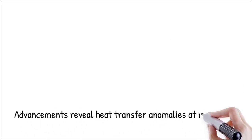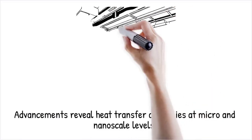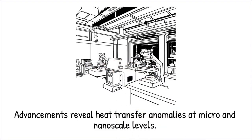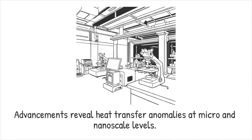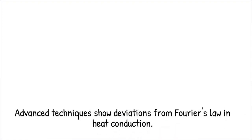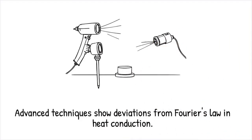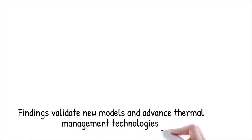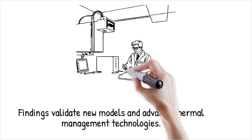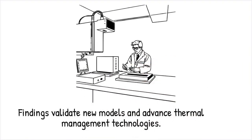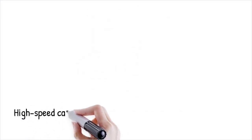Advancements in experimental techniques have enabled precise measurement of thermal conductivity and heat flux at micro- and nanoscale levels, providing evidence of anomalies in heat transfer. Techniques such as time-domain thermal reflectance, scanning thermal microscopy, and ultra-fast laser spectroscopy allow researchers to observe how heat propagates in materials under extreme conditions. Ultra-fast laser spectroscopy has revealed a finite speed of heat transfer in thin films, aligning with hyperbolic heat conduction models rather than Fourier's instantaneous diffusion.